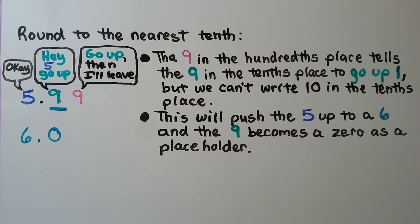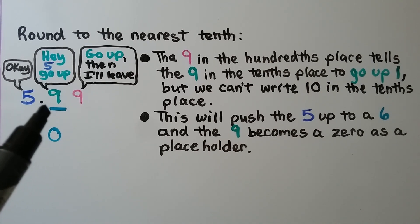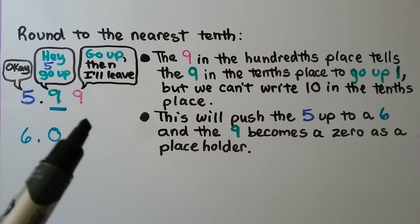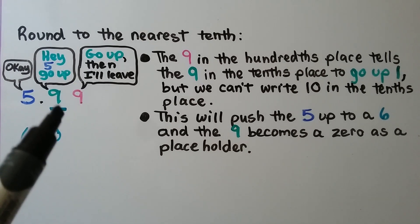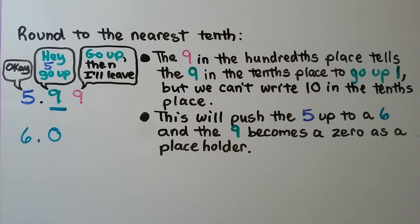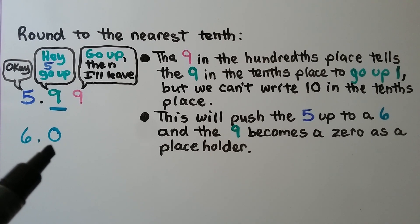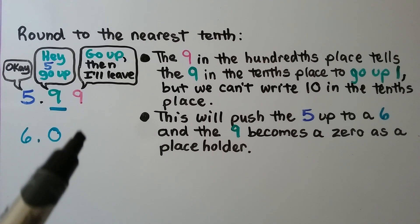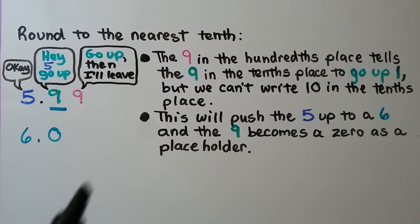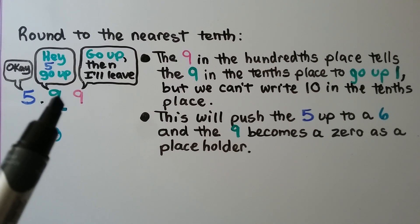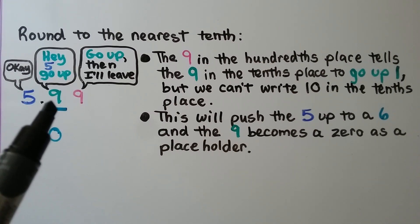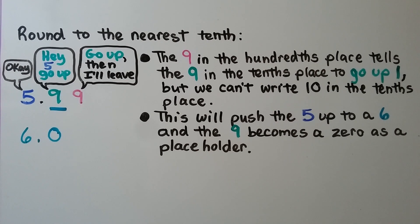We need to round to the nearest tenth. We have 5 and 99 hundredths. The nine in the hundredths place tells the nine in the tenths place to go up one, but we can't write 10 in the tenths place. This will push the 5 up to a 6, and this 9 will become a zero as a placeholder, and this 9 drops off. So the 9 said go up and then I'll leave, and he said hey 5, go up, and the 5 said okay. It rounds to 6 ones, written as 6 and 0 tenths.